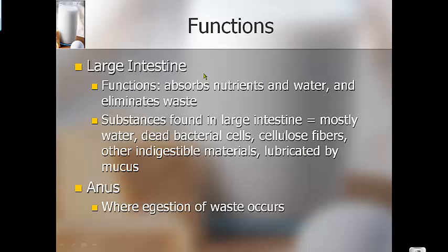Anything not digested or absorbed by your small intestine travels into your large intestine. There, the final bits of nutrients are absorbed, along with much of the water that has traveled through your system. The large intestine is where waste is eliminated. Substances found there include water, dead bacterial cells, fiber that can't be digested or absorbed, and other indigestible materials. The entire large intestine is lined with mucus that lubricates and moves feces and dead cells through.